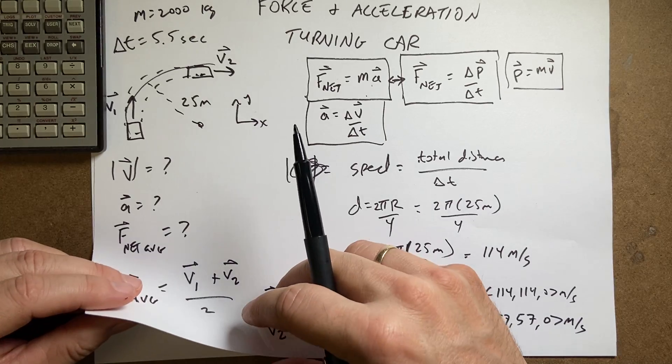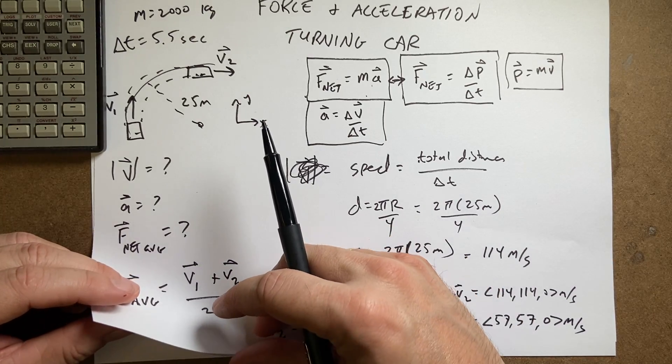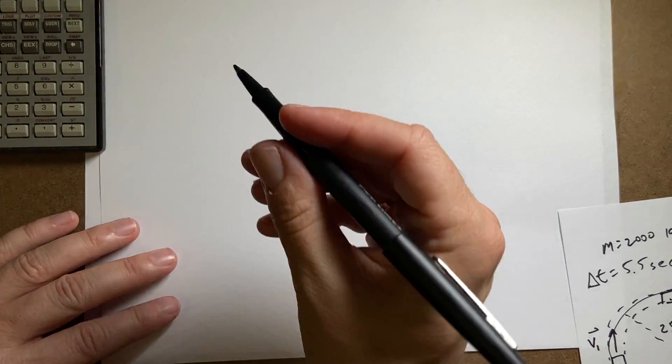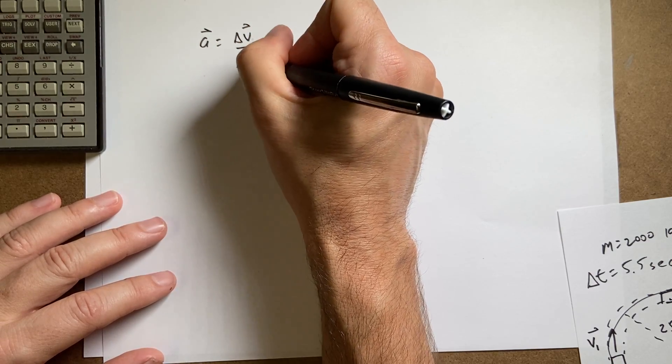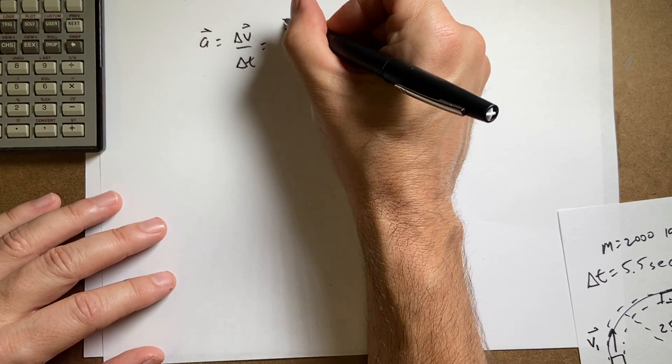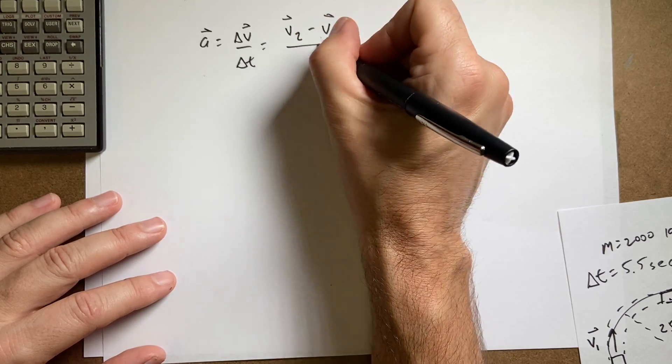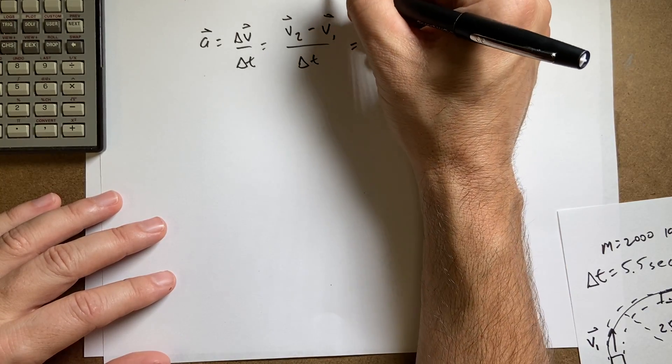So A is delta V over delta T. So it's going to be V2 minus V1 over delta T. So I know V1, this is going to be, I'll write it out.